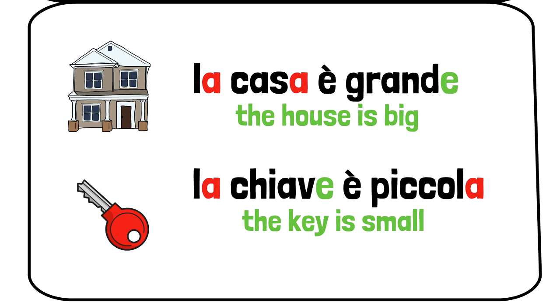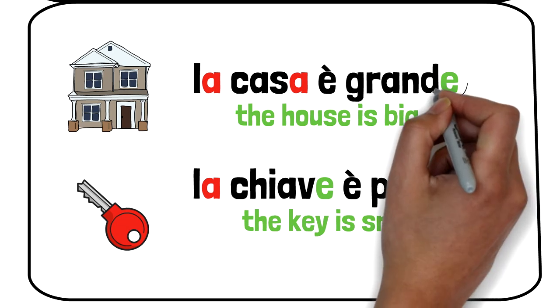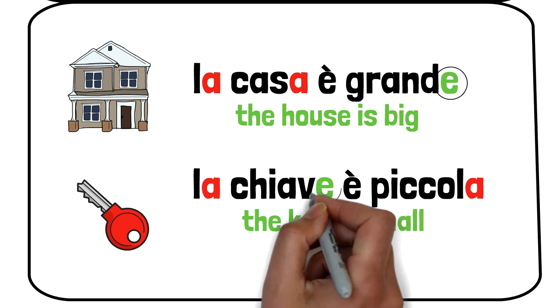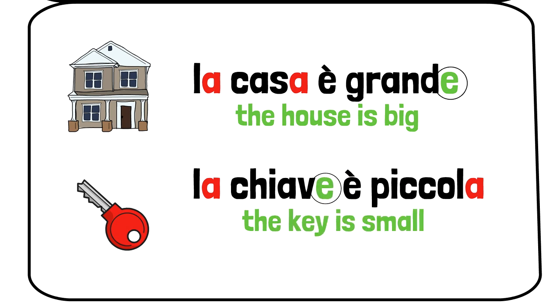The adjective grande is a neutral adjective. It means it's neither masculine or feminine, and its ending never changes. Chiave also has a different ending. It's called an exception. However, it is a feminine singular word.